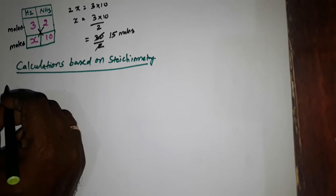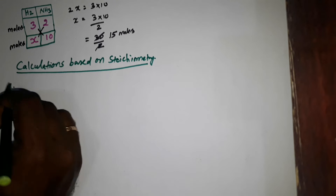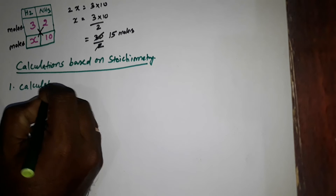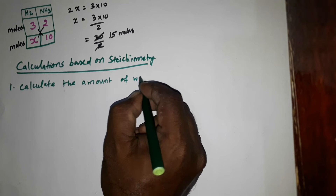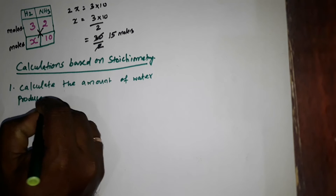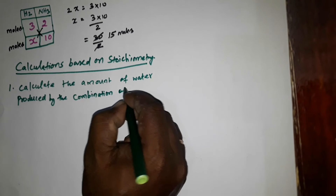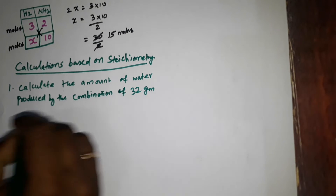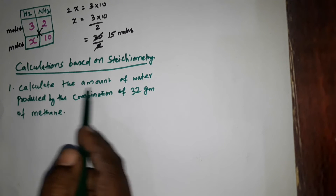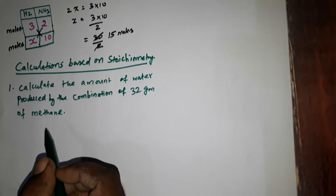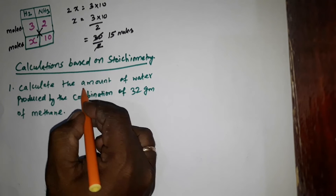One more example. In the previous video, we discussed about how many moles of hydrogen are required to produce 10 moles of ammonia. Now, one more example: calculate the amount of water produced by the combustion of 32 grams of methane. Here, the amount — that is mass — we are going to calculate the mass.